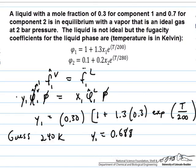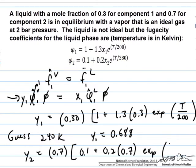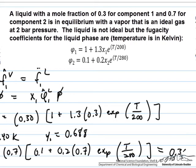Now we use the same expression for component 2. Taking y2 equal to x2, which is 0.7, times the fugacity coefficient of component 2, we have 0.1 plus 0.2 times 0.7 times the exponential of T over 280. This equals approximately 0.301.